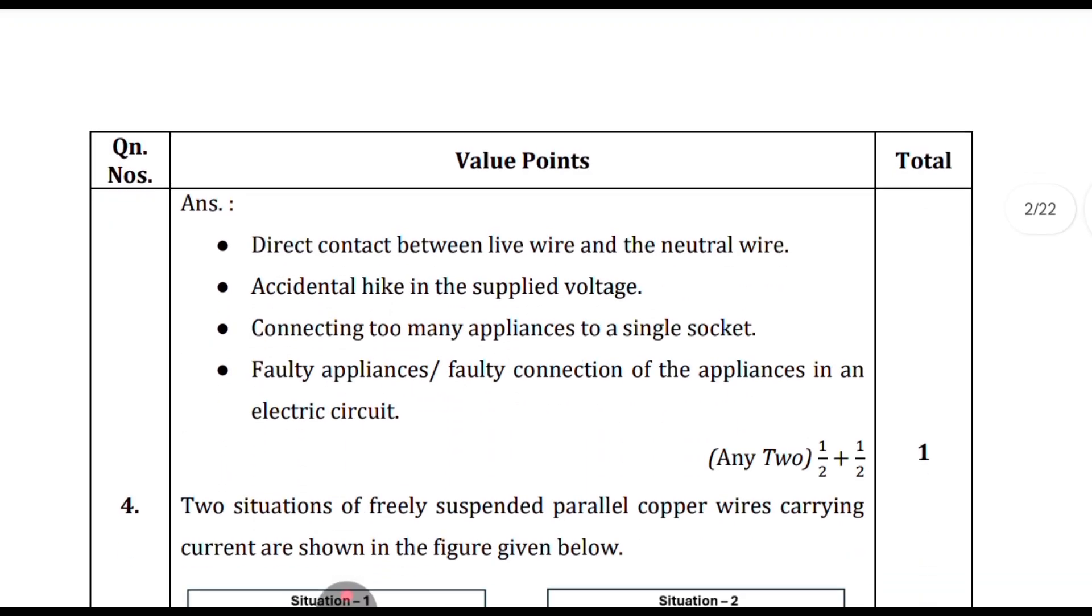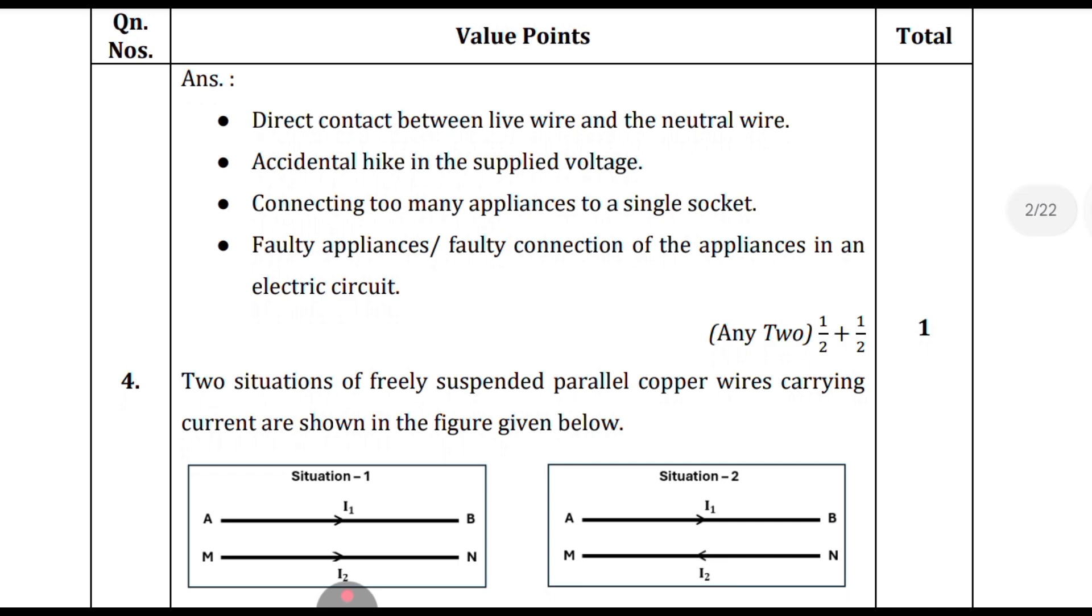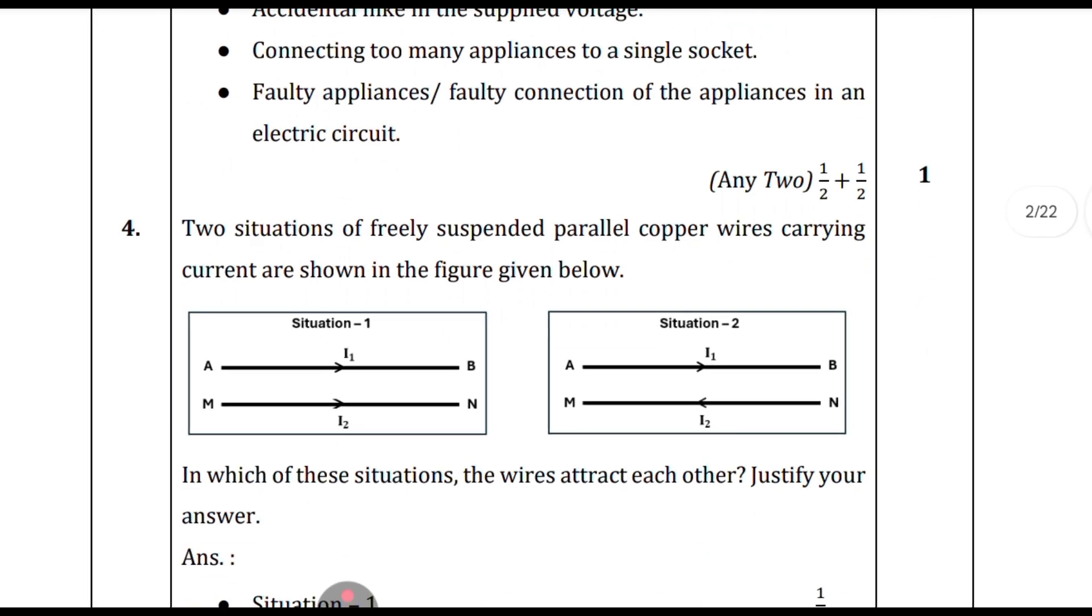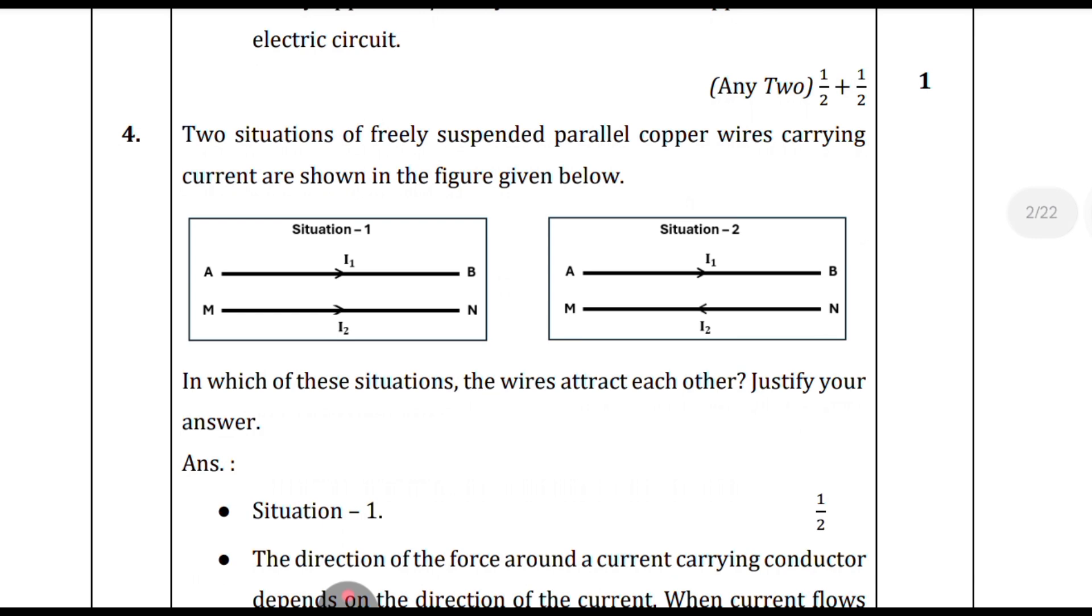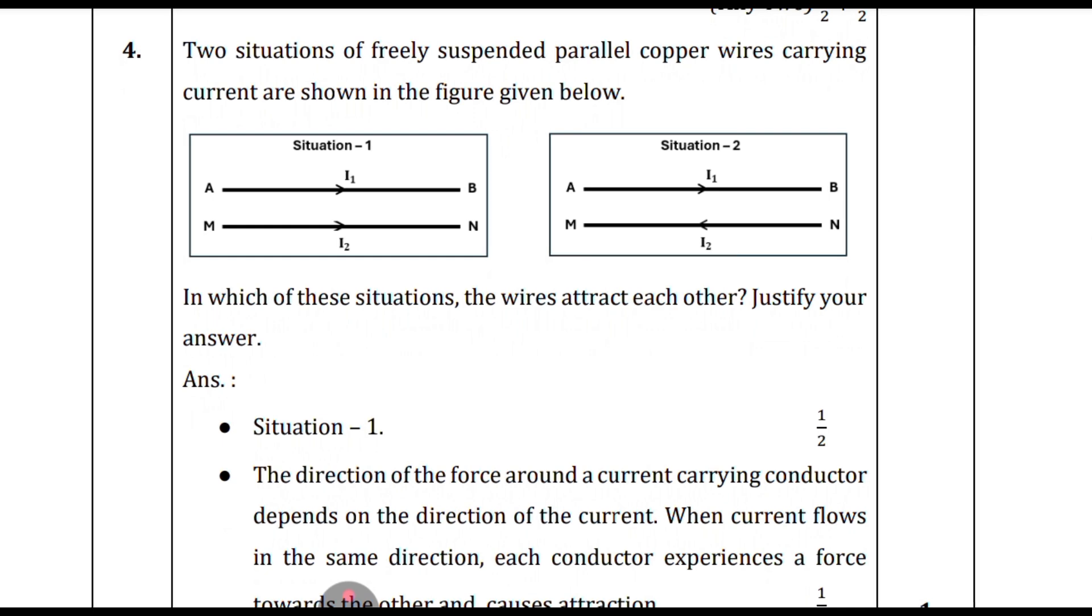This is for one mark. What are the reasons for overload in an electric circuit? If you write any two points, you will get one mark each. See the mark distribution at the right-hand side. I have properly mentioned there the mark distribution.